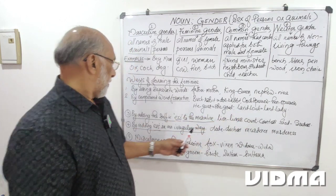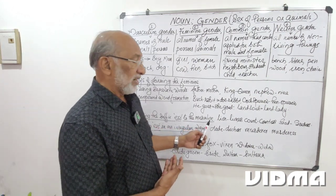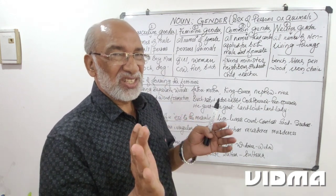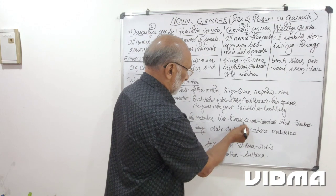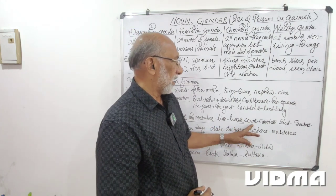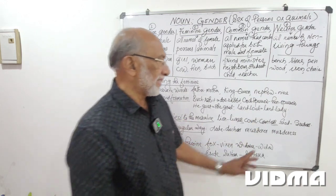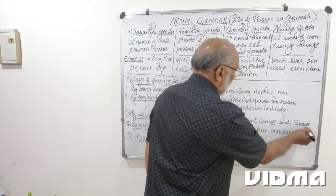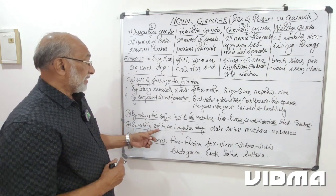The third way of forming the feminine gender is by adding the suffix '-ess' to the masculine gender. The root word remains intact with no changes — only '-ess' is added. Examples: lion becomes lioness, count becomes countess, god becomes goddess.